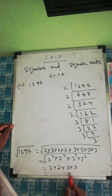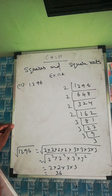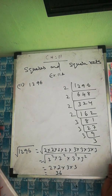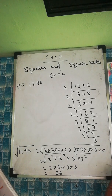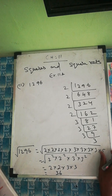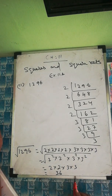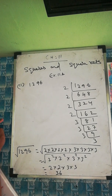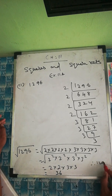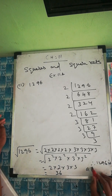Since all prime factors come in pairs — 2² × 2² × 3² × 3² — 1296 is indeed a perfect square. The rule is: if any prime factor is unpaired (extra count), it's not a perfect square. Therefore, 1296 is a perfect square number.